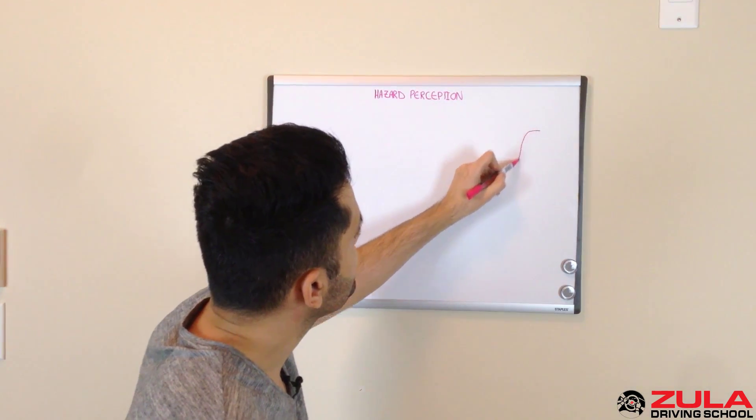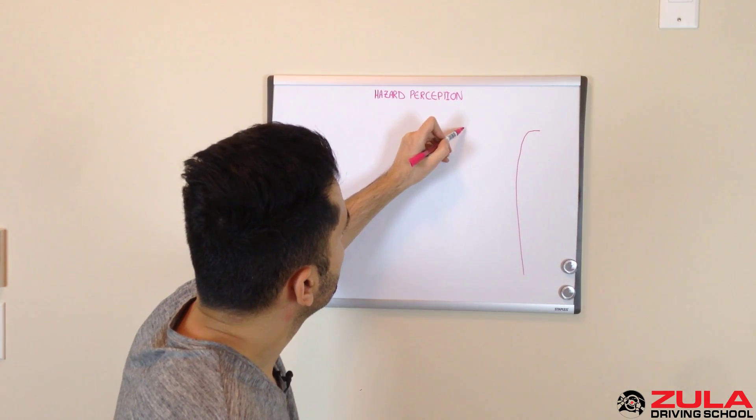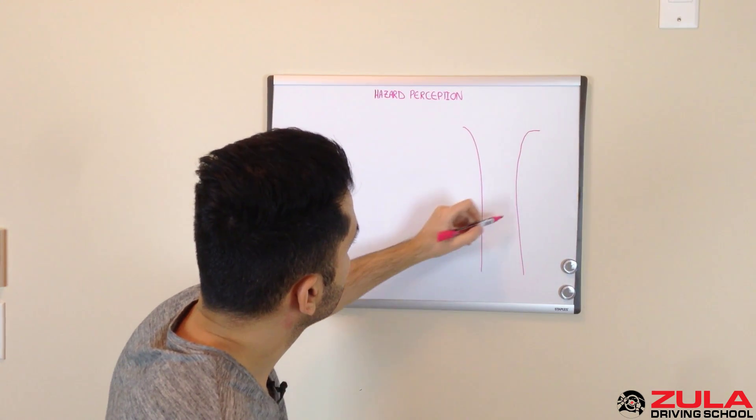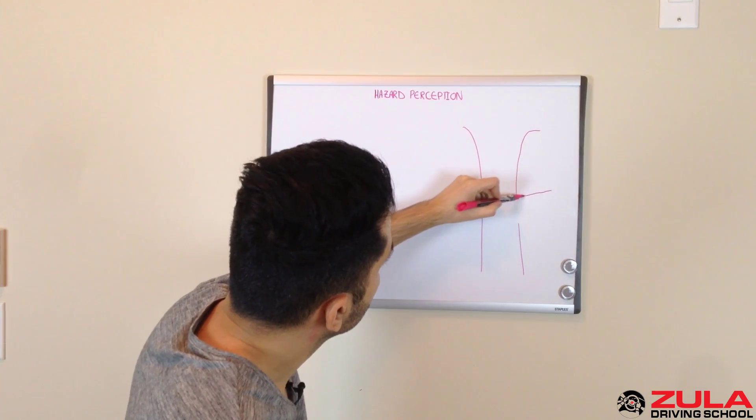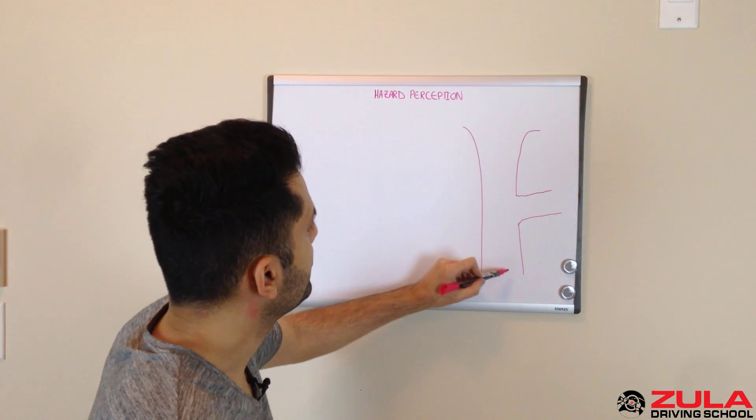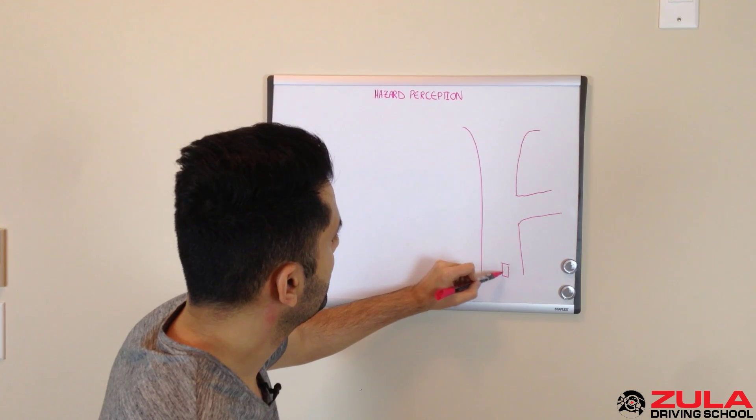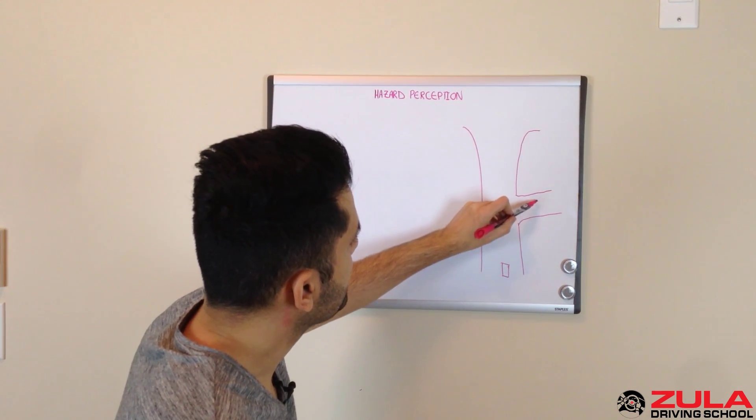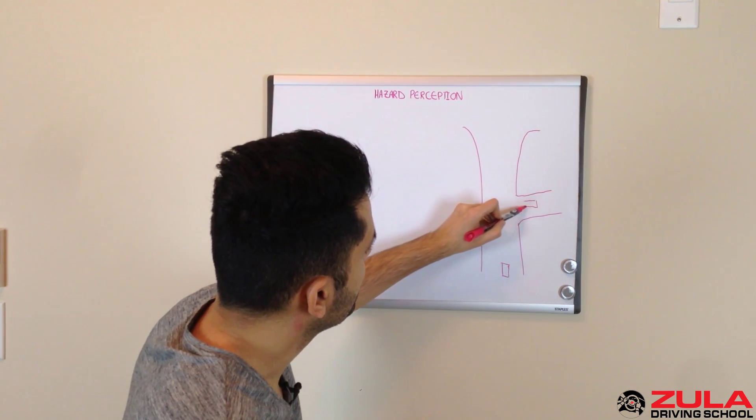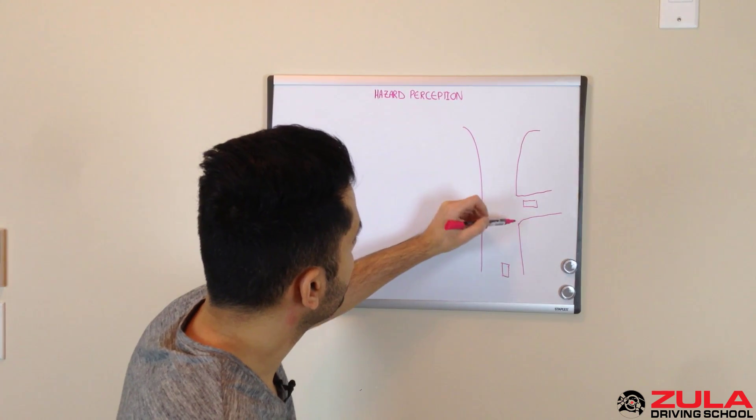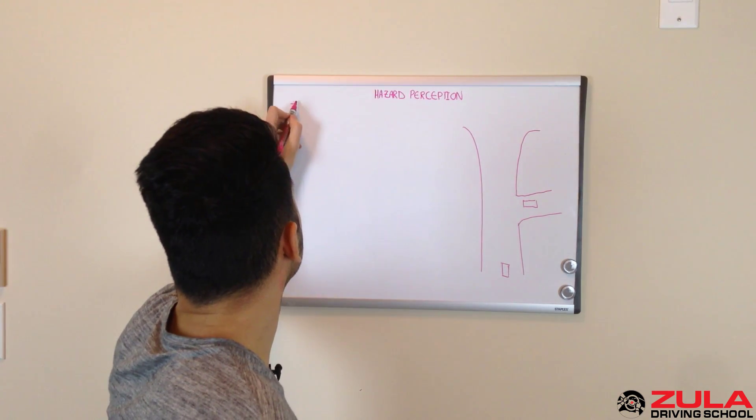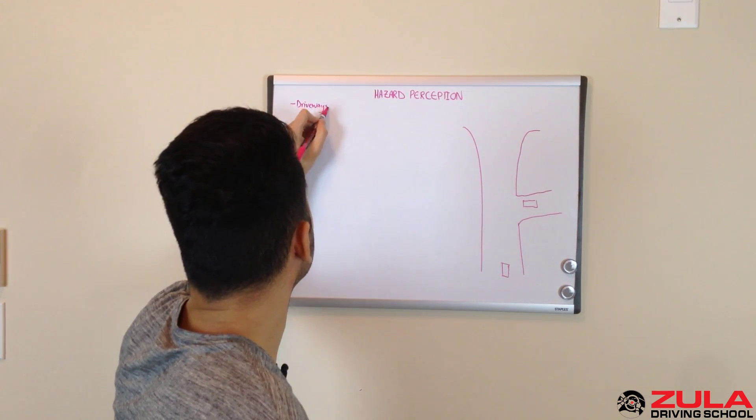So some of the hazards include driveways. So when you're driving down the road, driveways pose a hazard to you because there can be someone pulling out of the driveway. Alright, driveways.